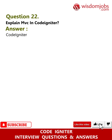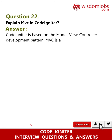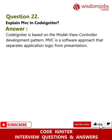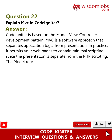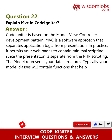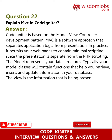Question 22: Explain MVC in CodeIgniter. Answer: CodeIgniter is based on the Model-View-Controller development pattern. MVC is a software approach that separates application logic from presentation. In practice, it permits your web pages to contain minimal scripting since the presentation is separate from the PHP scripting. The model represents your data structures — typically your model classes will contain functions that help you retrieve, insert, and update information in your database.